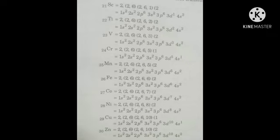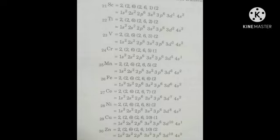Similarly, Titanium has configuration 1s2, 2s2, 2p6, 3s2, 3p6, 4s2, 3d2 — its 3d subshell has 2 electrons. Vanadium (atomic number 23) has configuration 1s2, 2s2, 2p6, 3s2, 3p6, 4s2, 3d3 — it has 3 electrons in the d subshell.